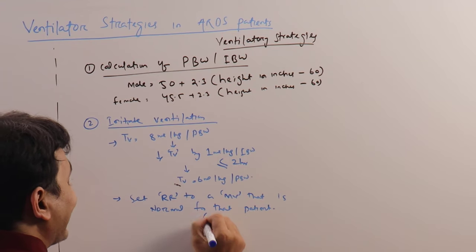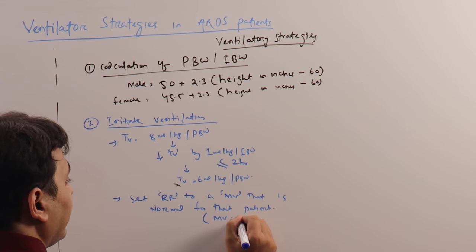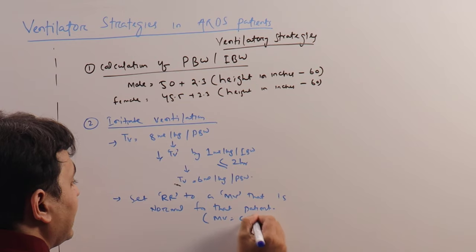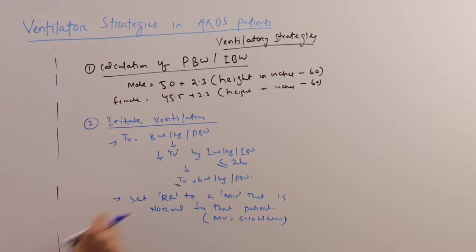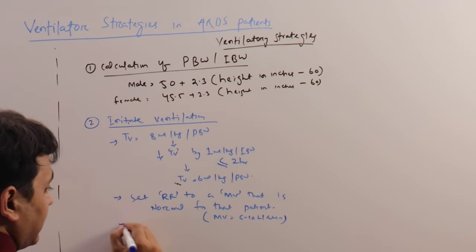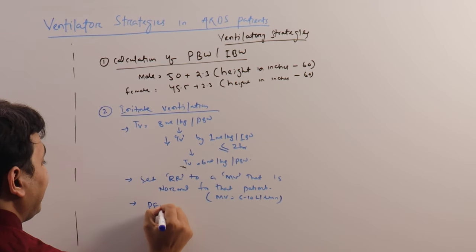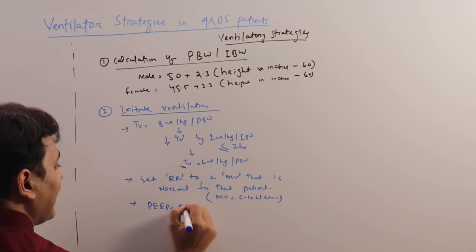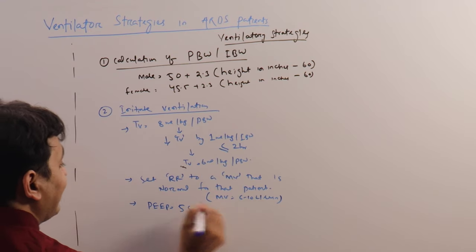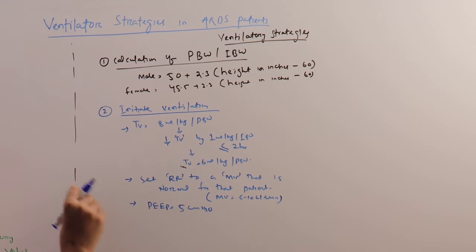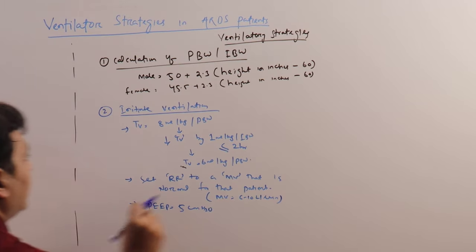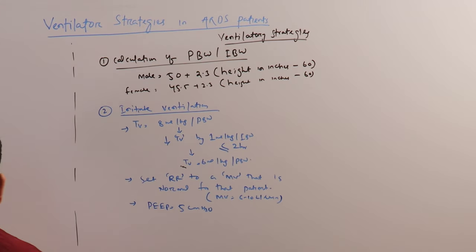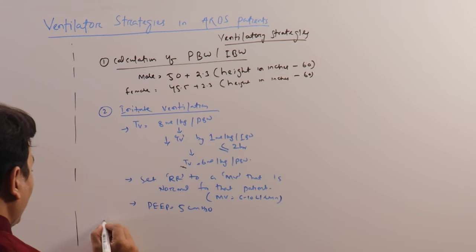Number 2: set a respiratory rate to achieve a minute ventilation that is normal for that patient. Ideally, we target a minute ventilation of 6 to 10 liters per minute, so set the respiratory rate accordingly. Number 3: apply PEEP of at least 5 cmH2O to prevent end-expiratory collapse or de-recruitment of the recruited alveoli.